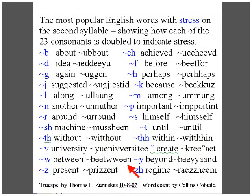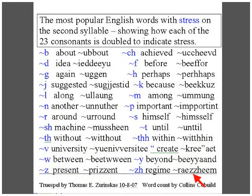'Between.' 'Beyond.' 'Present.' Now, that could also be spoken as 'present' — this way of showing the verb form. 'Present.' 'Present.' And last: 'regime.'